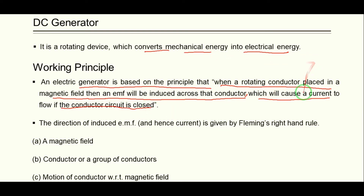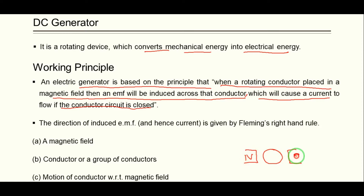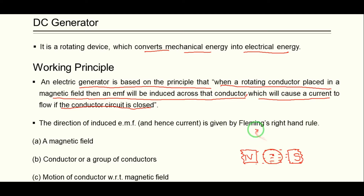If there is a rotating conductor placed in a magnetic field, there are two parameters: first, the magnetic field — magnetic lines passing from north to south — and second, the rotating conductor. When the conductor is placed and rotated in a constant magnetic field, because of Faraday's law, an EMF will be induced across the conductor.